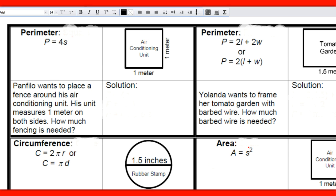Perimeter, let's start there. Perimeter of a square, the formula is P equals 4 times S, which means side plus side plus side plus side, or 4 times the actual measurement of the side. For instance, we have a problem here that says Panfilo wants to place a fence around his air conditioning unit. His unit measures 1 meter on both sides, so that means the other two is going to be congruent, they're 1 meter. So we need to determine how much fence is literally needed.